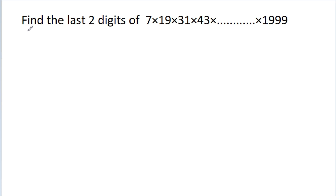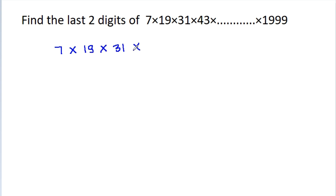In this video, we have to find the last two digits of 7 times 19 times 31 times 43 times up to 1,999.